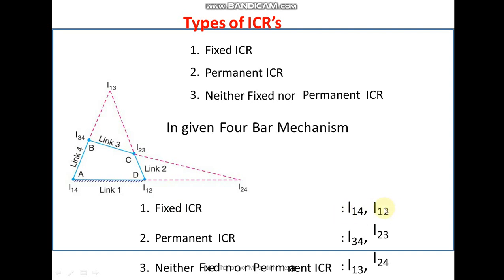To summarize: fixed ICRs are those with reference to the fixed link, so i12 and i14 are fixed ICRs. The second type is permanent ICR. The connection between link three and four is called i34, and the connection between links two and three is called i23. When the mechanism moves, points b and c will move to b' and c', but their ICRs remain at the same junction — i23 stays at the junction of two and three, and i34 stays at the junction of three and four.